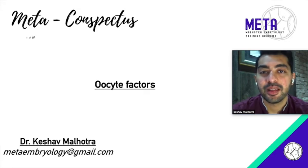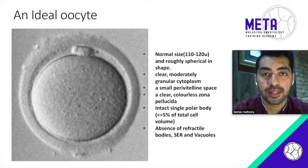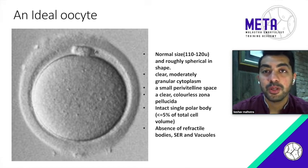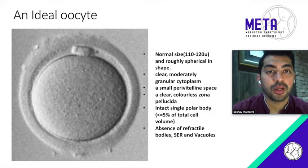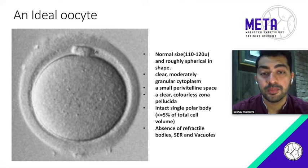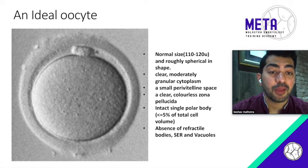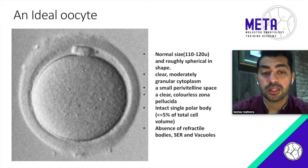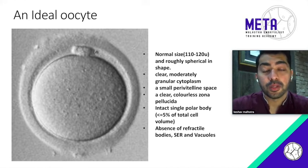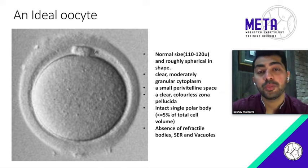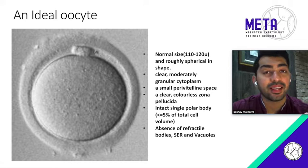Whenever an embryologist tries to grade an oocyte, these are the parameters we look for: it should be normal in size — about 110 to 120 microns in diameter — roughly spherical in shape, with clear to moderately granular cytoplasm. It should have a small perivitelline space, an intact polar body within that perivitelline space which is less than 5% of total cell volume, and a colorless clear zona pellucida no thicker than 22 microns (normally about 17 microns). Lastly, the cytoplasm should be devoid of any inclusion bodies like refractile bodies, vacuoles, or SERs.